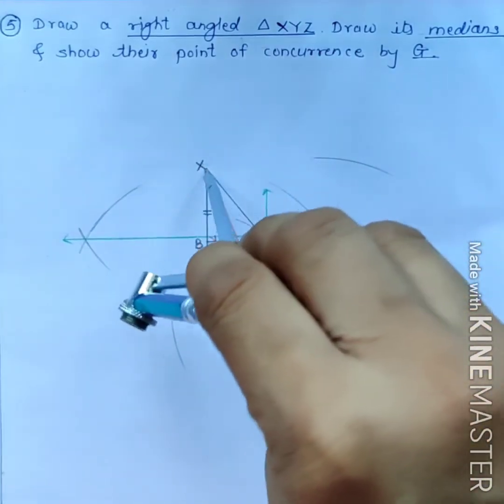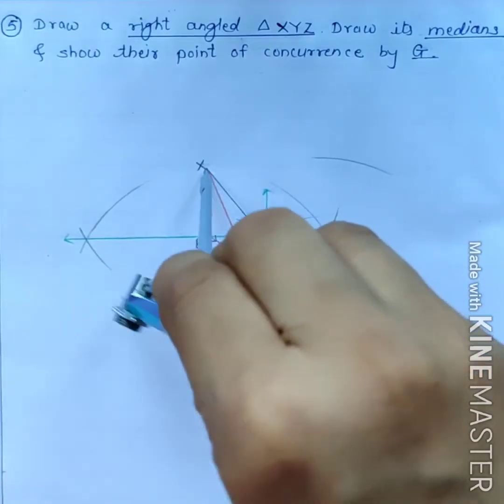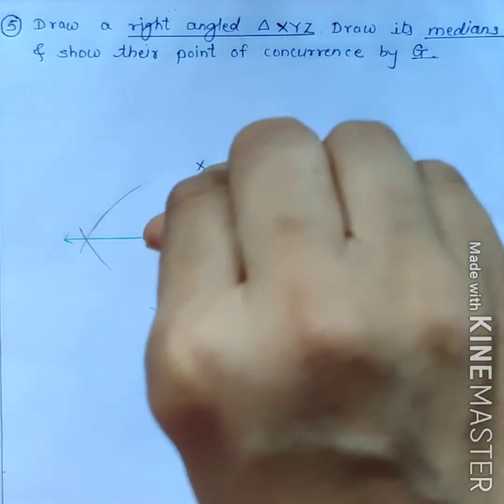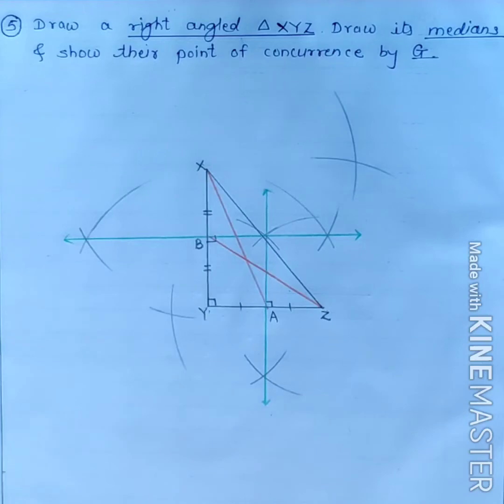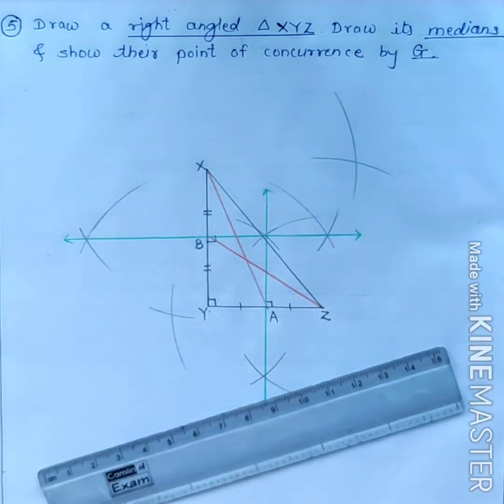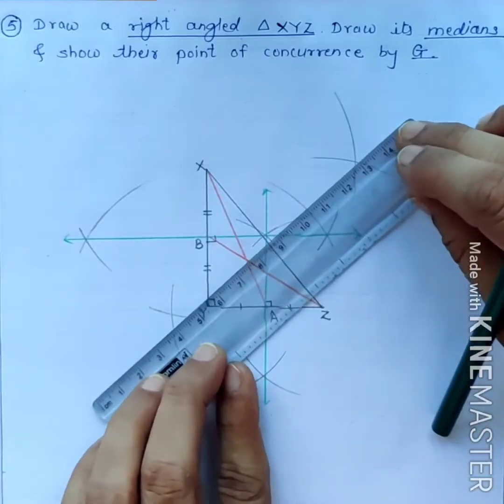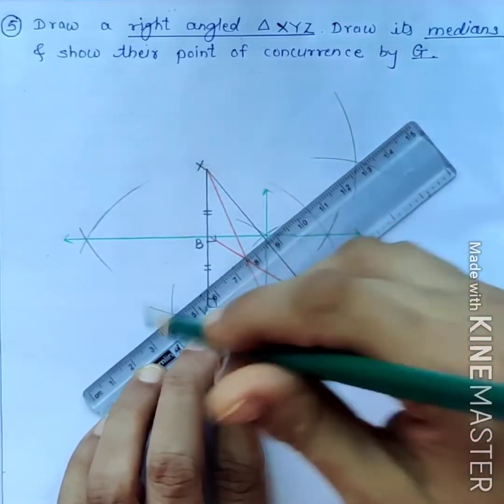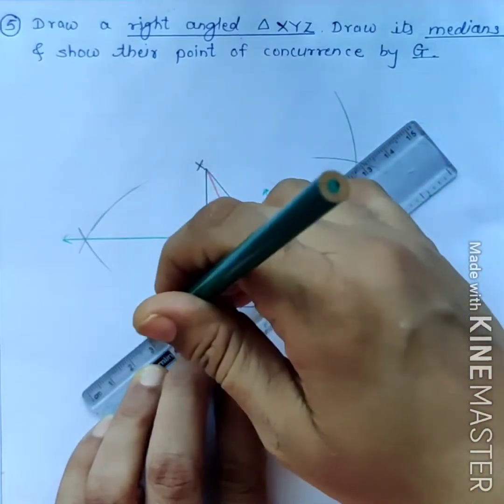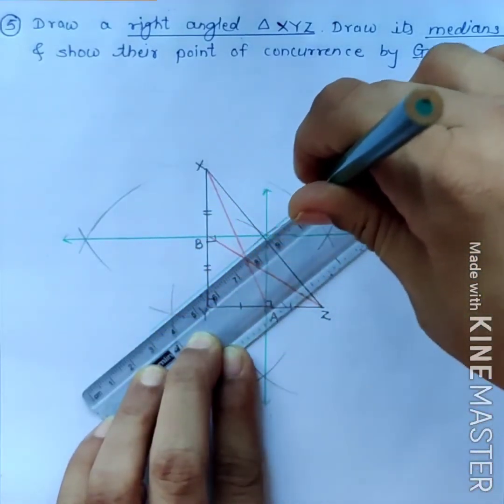Then, keep compass on point X and draw arcs intersecting the previous arcs like this. Then, join these two points.